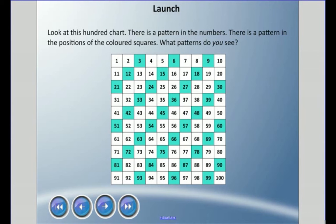Hello folks, welcome to our next unit in math. It's about patterns and equations. We have something here called a hundred chart — a chart from 1 to 100 arranged in rows and columns of 10. I have a pattern here in the numbers with the colored squares, and there's also a pattern in the position of the colored squares. Do you see any other patterns going on?